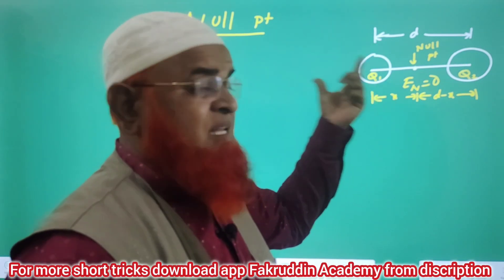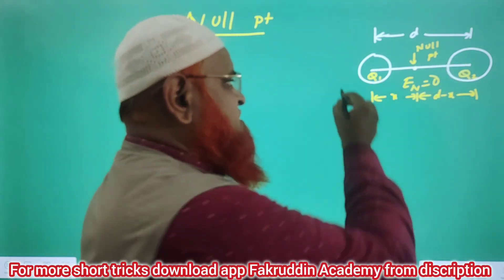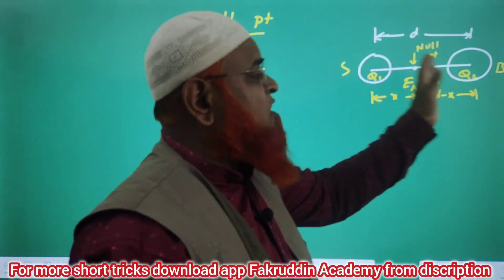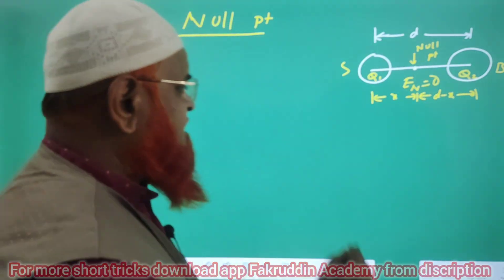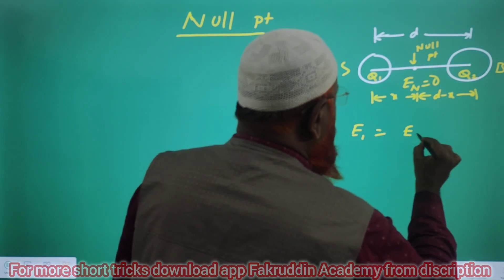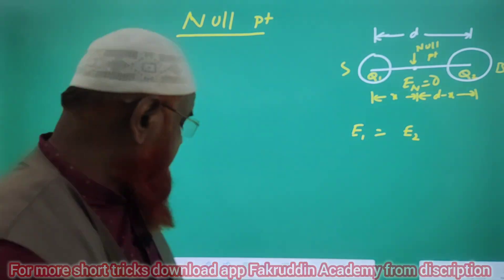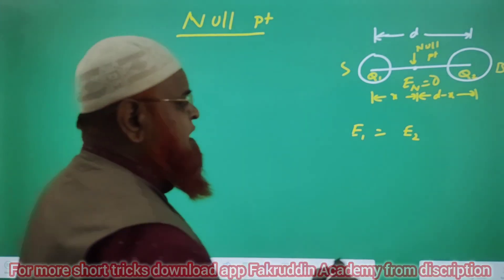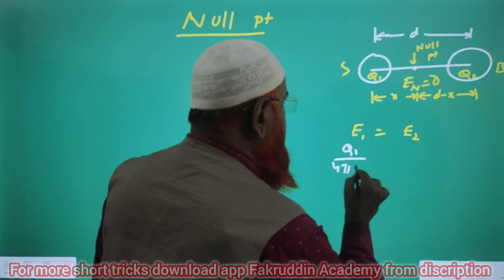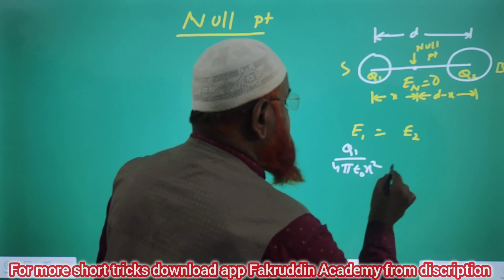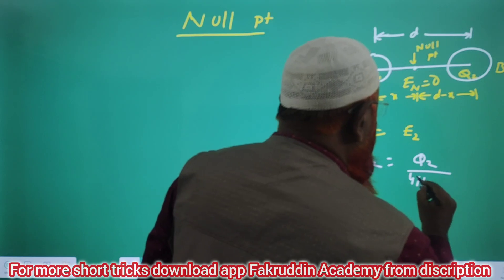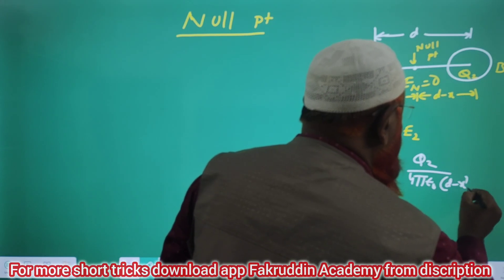Then how can you find out the null point from the smaller charge? This is said to be the smaller charge and this is taken as the bigger charge. The null point can always be found from the smaller charge. So the formula for that is: the electric field intensity due to the first charge is counterbalanced by the electric field intensity due to the second charge. The formula for electric field intensity is Q1 divided by 4π ε₀ into X squared. And from the second charge it is Q2 divided by 4π ε₀ into (D minus X) whole squared.